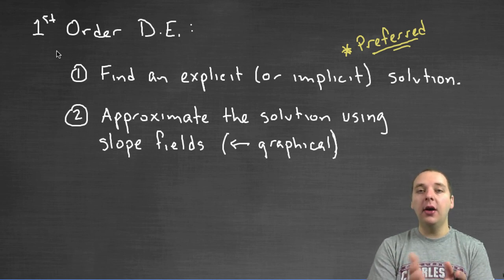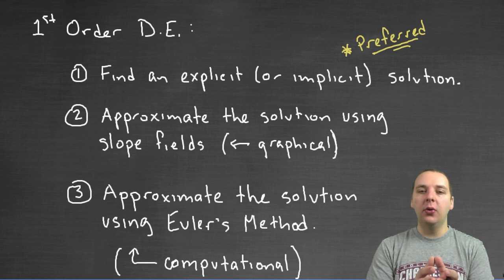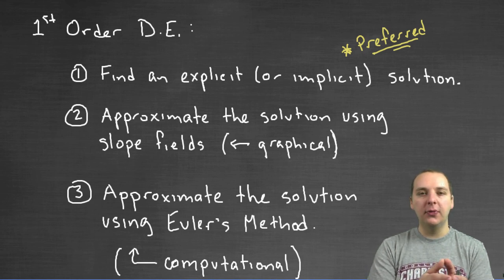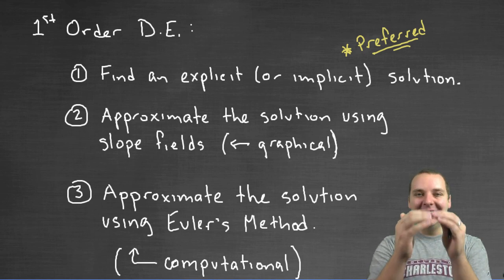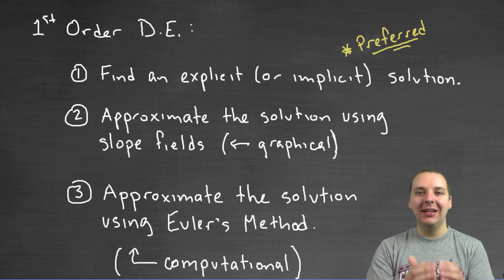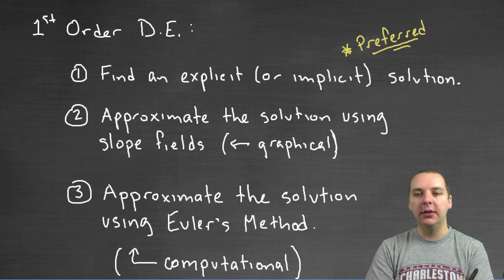We do have another way to approximate solutions, and that's what we're going to look at in this video. This is called Euler's method. Euler's method is not graphical like slope fields — this is more computational. What we'll be doing is actually generating an iterated list of points that would be very close to the solution curve.